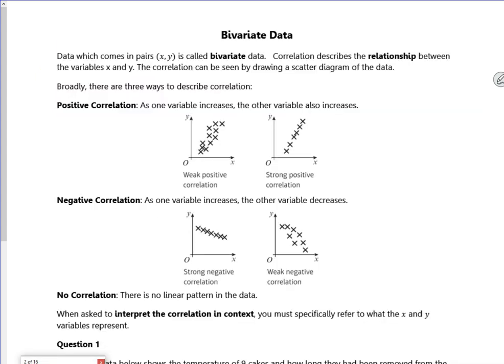So bivariate data. It's kind of like, if you look at the word bivariate, it's two variables. And if you look, it comes in a pair of x and y's, which is scattergraphs. So yeah, nice and easy. So it says correlation describes the relationship between variables x and y.